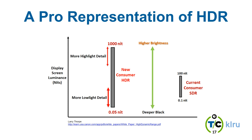This representation is from Larry Thorpe's HDR white paper for Canon — an excellent resource if you're interested in the technology. On the left is the new consumer HDR, with a much wider range measured in nits — a measure of physical screen brightness. Current screens don't get super black or super bright; new screens do. And it's actually a physical difference: it's not just the content looking different — the panels themselves are putting out more light in white areas and less light in black areas.